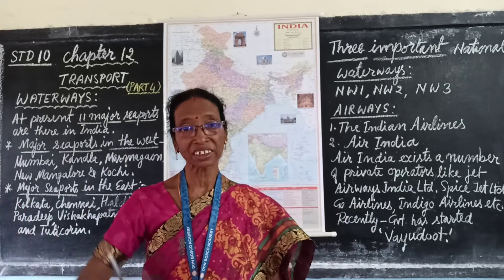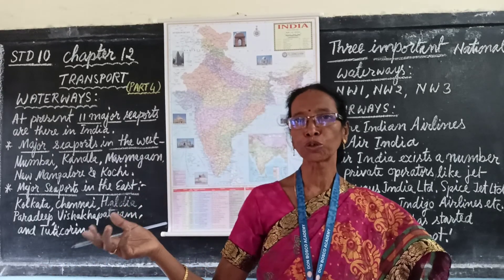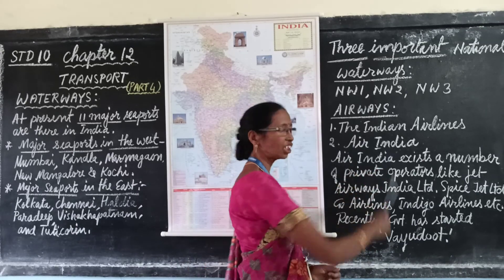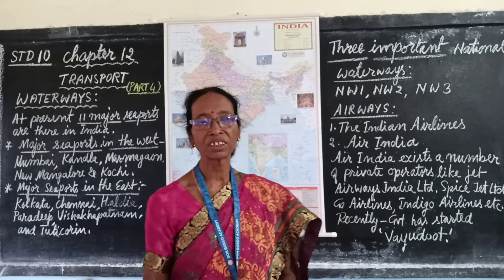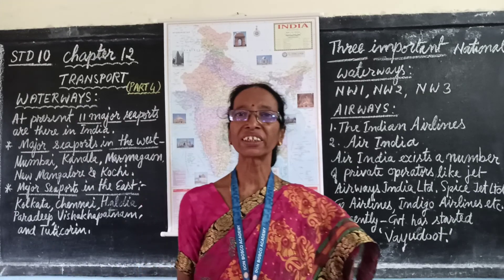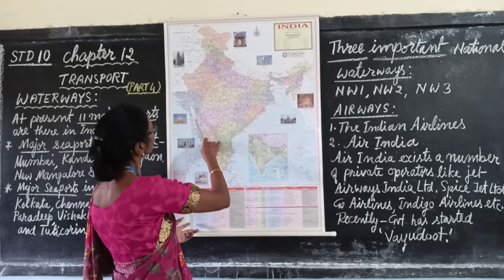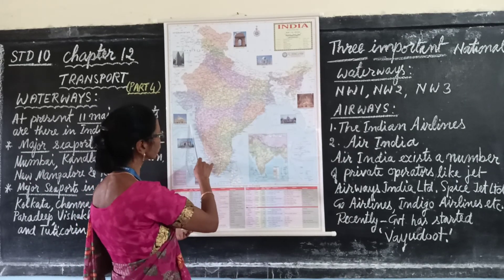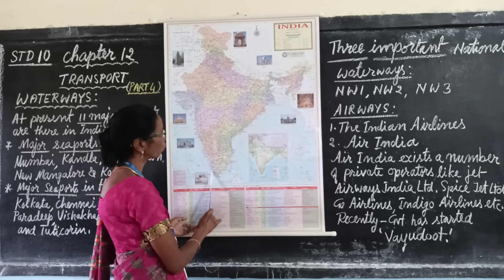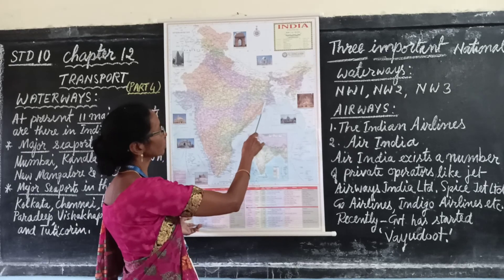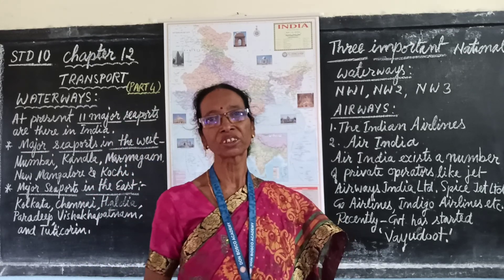Air India provides services internationally, connecting other countries and continents all over the world. In our country there are many international airports located all over India — in Delhi, Ahmedabad in Gujarat, Jaipur in Rajasthan, Mumbai in Maharashtra, Bengaluru in Karnataka, Hyderabad in Andhra Pradesh, Chennai, and Kolkata in the eastern part, and Varanasi in the northern part. All these are important international airports in India.